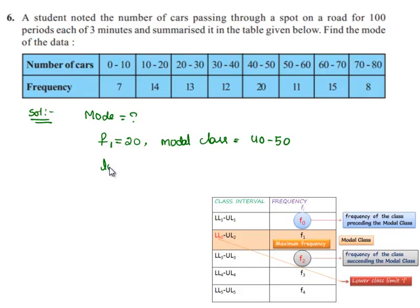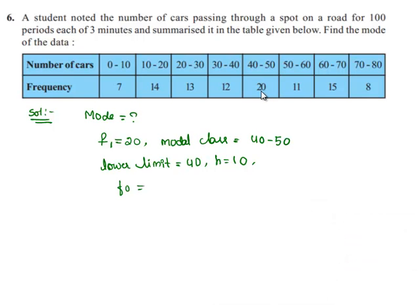The lower limit L is 40, and the class size, that is the difference between the upper limit and lower limit, is 10. Here the preceding frequency is the frequency before the modal class, that is 12, and the succeeding frequency is the frequency after the modal class, it is 11.